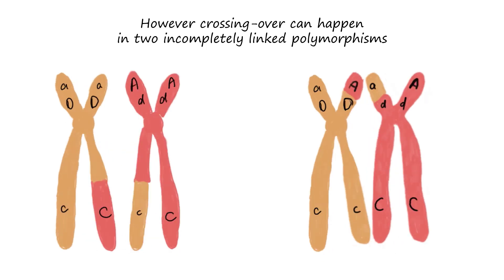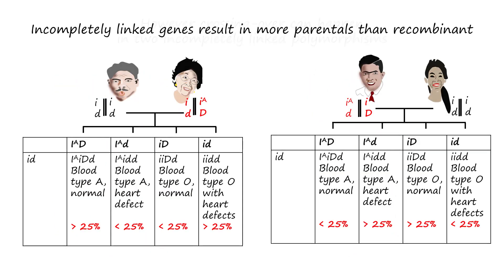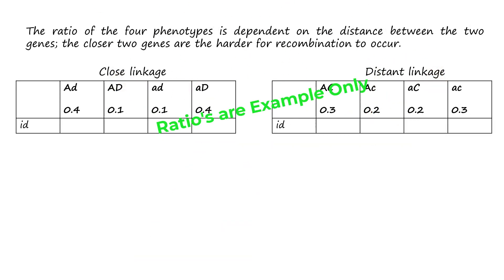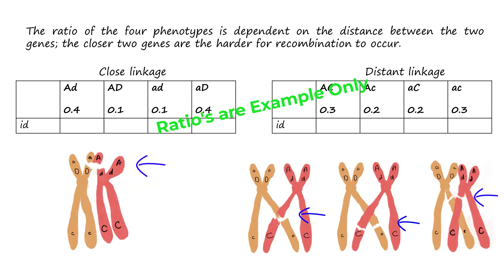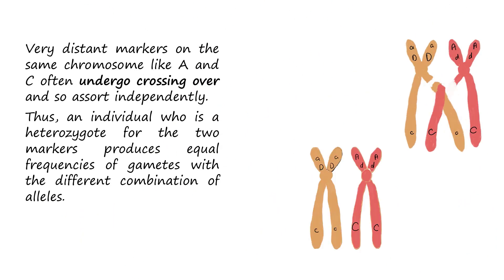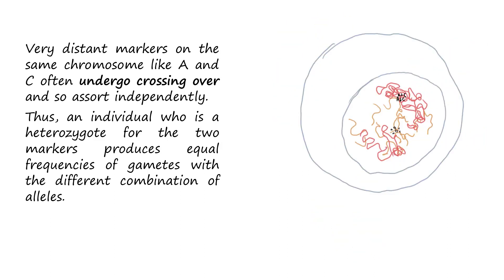However, linkage is not always complete and crossing over can happen between two linked polymorphisms. If crossing over occurs, the F1 of the mating between a heterozygous and homozygous recessive will probably result in four phenotypes, but more parentals than recombinants. The ratio of the four phenotypes depends on the distance between the two polymorphisms. The closer the two polymorphisms are, the harder for recombination to occur. However, very distant markers on the same chromosome, like A and C, often undergo crossing over and so assort independently.